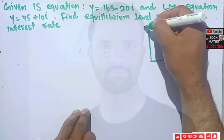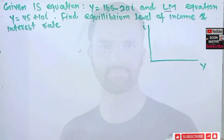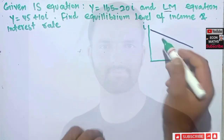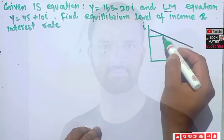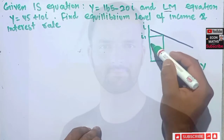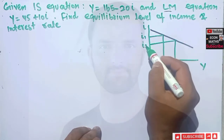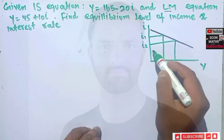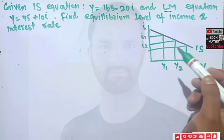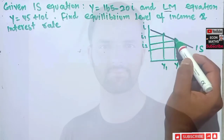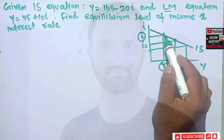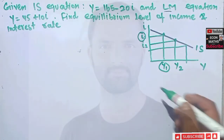The IS curve is downward sloping. On one axis we have income and on the other we have the rate of interest. The IS curve shows us different combinations — (I1, Y1), (I2, Y2), (I3, Y3) — for which the goods market is in equilibrium.